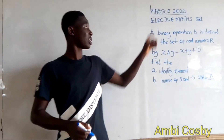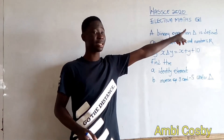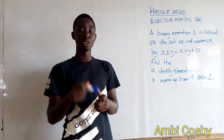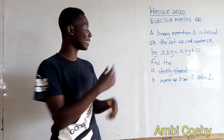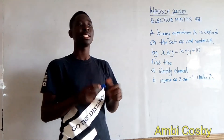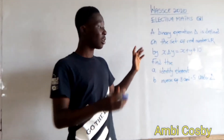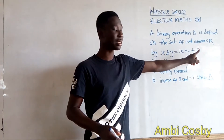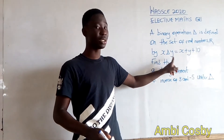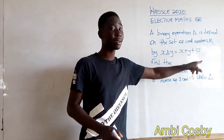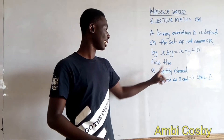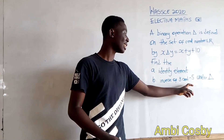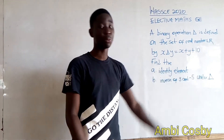In this video we are going to solve the 2020 Learning Mathematics question number 1. If today is your first time on this channel, please subscribe and hit the notification bell so that anytime we upload a video you get notifications. Now let's start the question. A binary operation is defined on the set of real numbers R by x ∗ y = x + y + 10. Find: (a) the identity element, (b) the inverse of 3 and -5 under the operation.